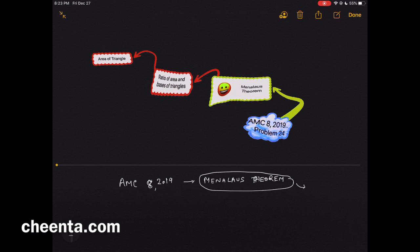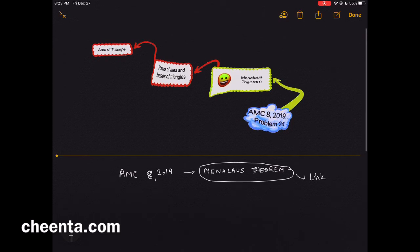This problem from AMC 8 2019 uses an idea from Menelaus theorem. If you are in our program, you know that it is a major competency in the geometry focus area. The link in the description will take you to the knowledge graph page, and this particular picture that you see in the video is part of the knowledge graph that we use in mastering this problem.